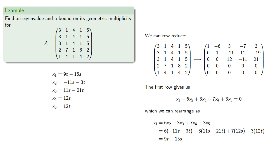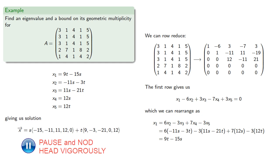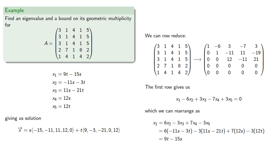And so we can express our solution in vector form. And each free variable corresponds to an eigenvector for lambda equals 0. And so our vector solution also gives us the two linearly independent eigenvectors associated with lambda equals 0.